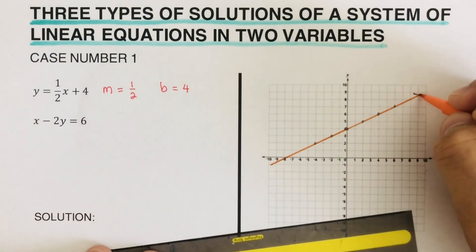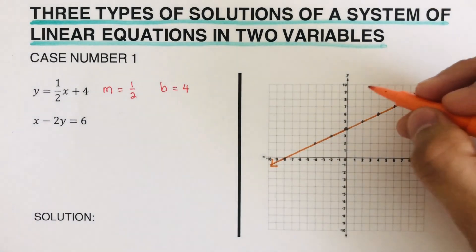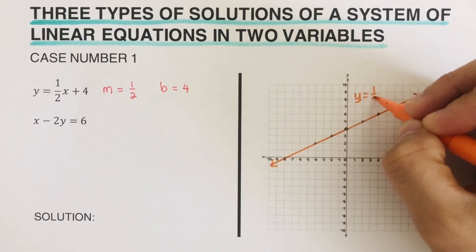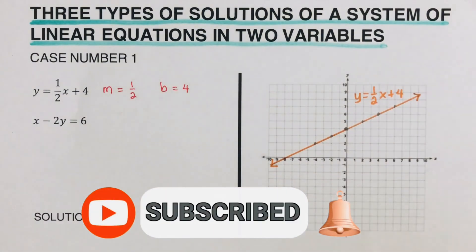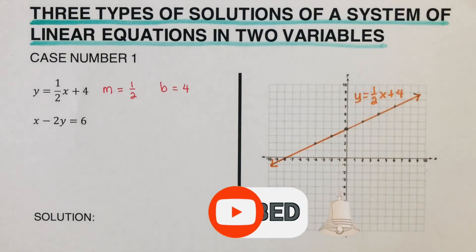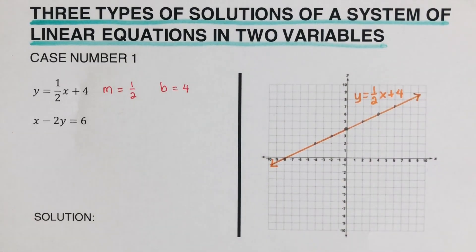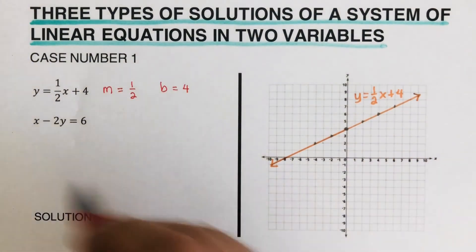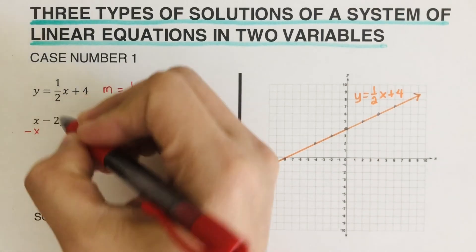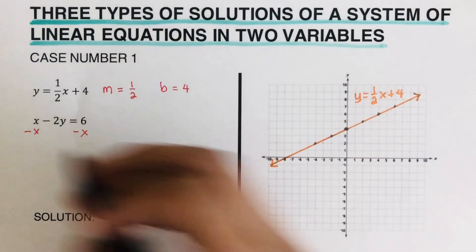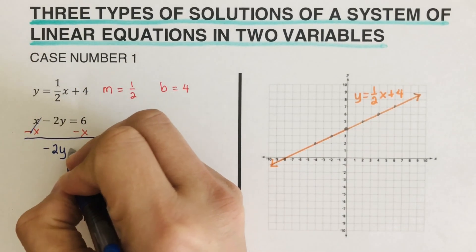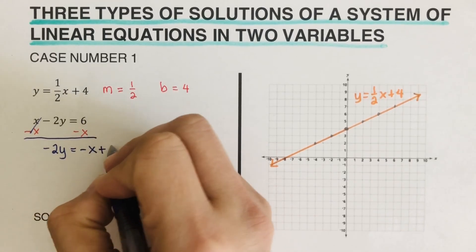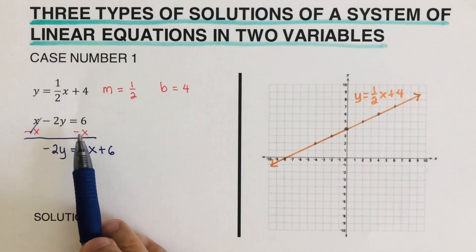I use orange for the first line, so we can label this as y equals one half x plus four. Now the second equation is not in slope-intercept form, so we're going to change it to its equivalent slope-intercept form so we can see what the slope and y-intercept are. Using this equation, we subtract x from both sides, so we're left with negative two y equals negative x plus six.